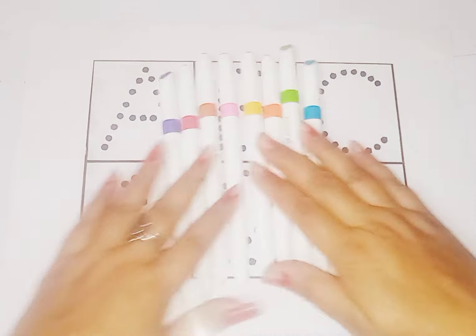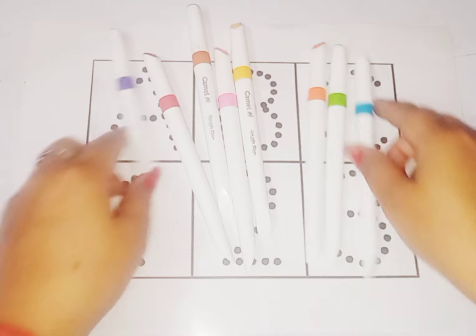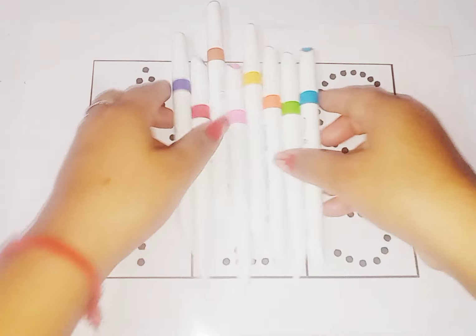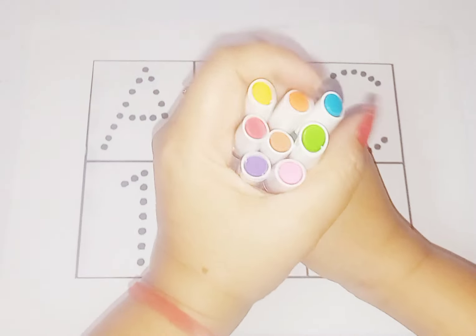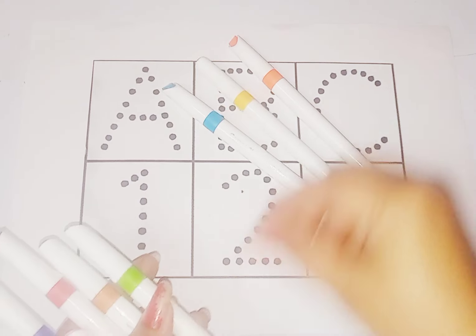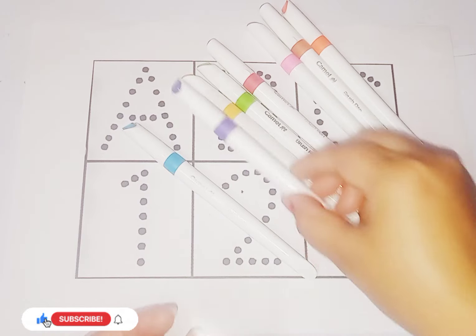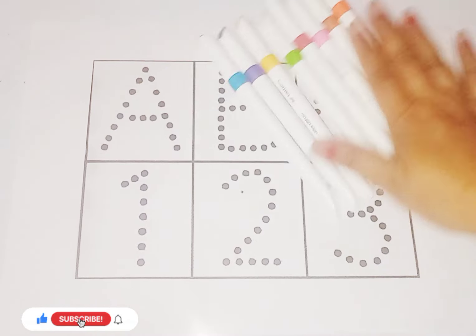Hello kids, welcome to today's study class. Today we learn alphabets and numbers and learn some colors names. These are colors: blue color, orange color, yellow color, parrot green color, brown color, red color, pink color, violet color.